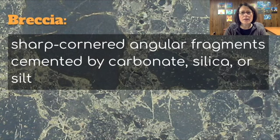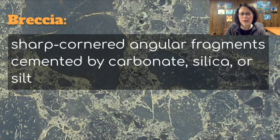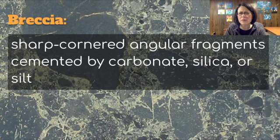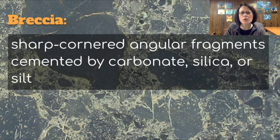Another type of clastic sedimentary rock is breccia: sharp-cornered angular fragments cemented by carbonate, silica, or silt. Compared to conglomerate, which has very rounded fragments showing they've been tumbled in water, breccia fragments are much sharper and more angular.